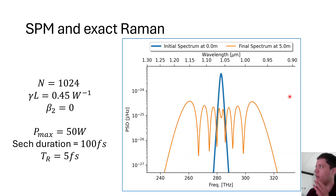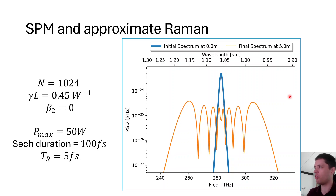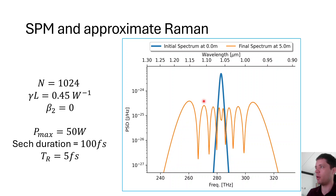Comparing the exact implementation to the approximate implementation, there is a difference in the spectrum for this particular choice of parameters, but we still manage to capture the overall effect that the red frequencies are more intense than the blue frequencies. It is quite interesting that we can capture some of the same dynamics even though we're replacing a convolution with a derivative.